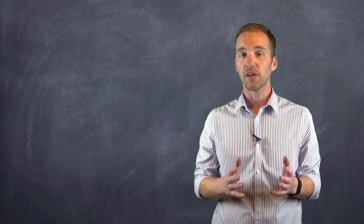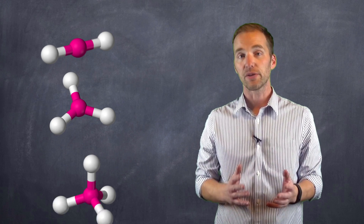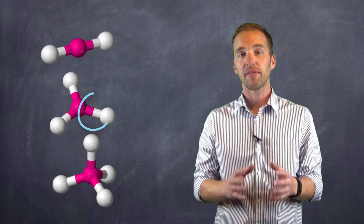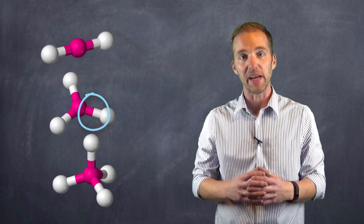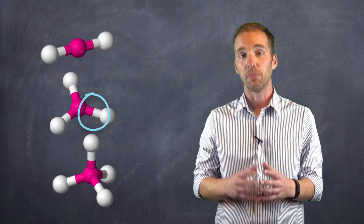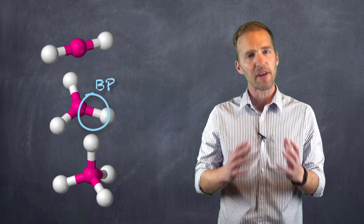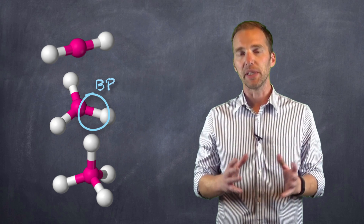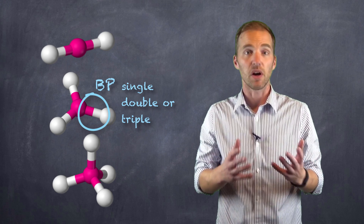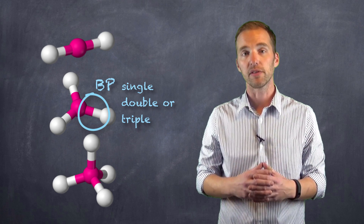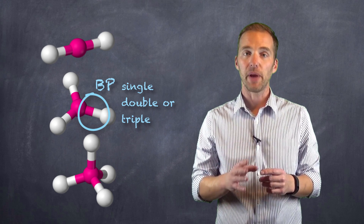Regardless of whether we're looking at the linear, trigonal planar, or tetrahedral molecule, all of these have VSEPR pairs — electron domains that could be either bonded pairs or lone pairs. In these cases, they've all been bonded pairs. VSEPR pairs aren't limited to single bonds; they could be double bonds or triple bonds. But each one of these bonds, regardless of whether it's single, double, or even triple, is treated as one VSEPR pair.